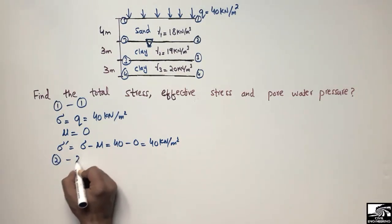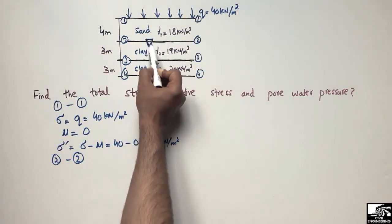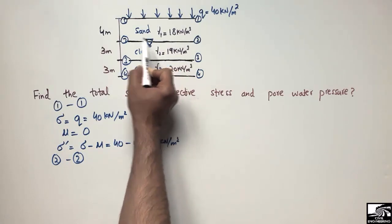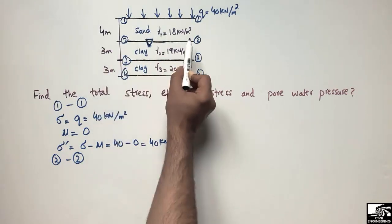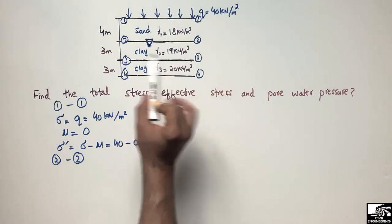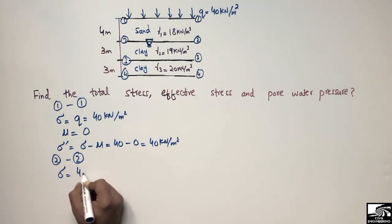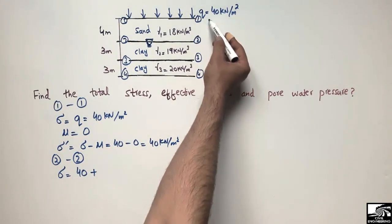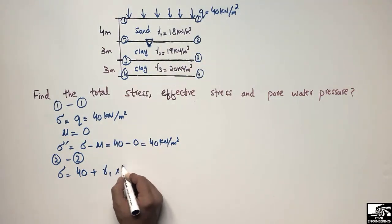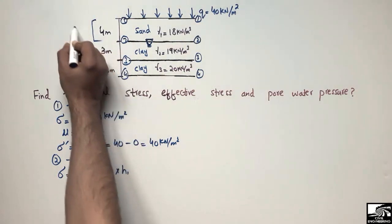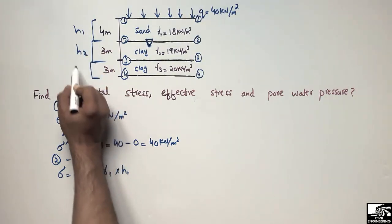Now to find the stresses at point 2-2. At this point we still don't have a water table; the water table is at a distance of 4 meters from the top of the soil. So at point 2-2 there is no water table, and again the pore water pressure will be zero. The total stress at 2-2 equals 40 kN/m² (external pressure) plus gamma 1 multiplied by h1.